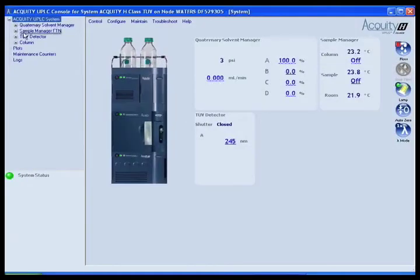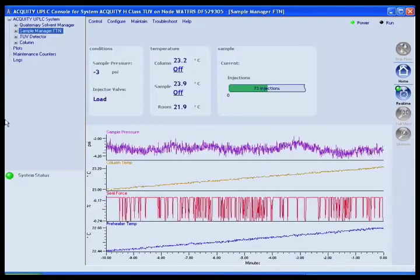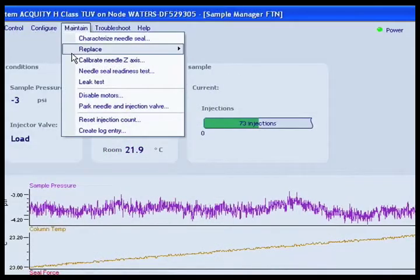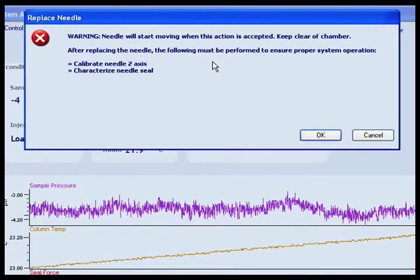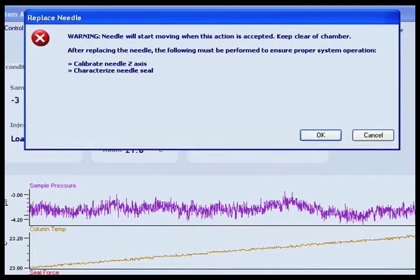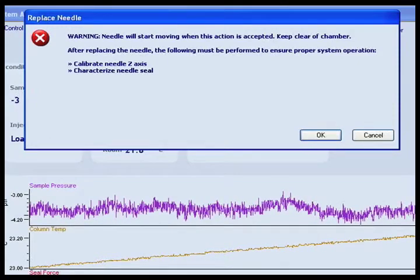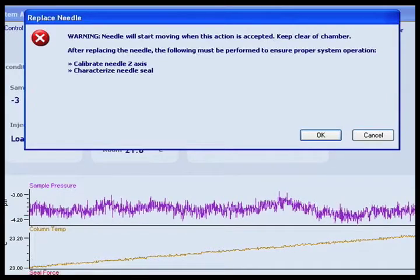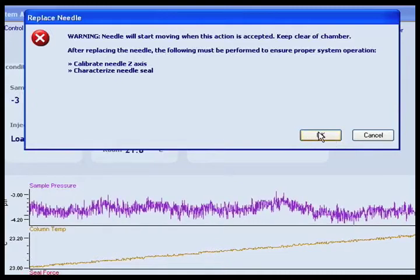In the console, select Sample Manager FTN from the system tree. From the menu bar, click Maintain, Replace Needle. A message appears warning that the needle will move when the action is accepted and to keep clear of the chamber. A reminder to calibrate the needle's Z-axis and to characterize the needle's seal after replacing the needle also appears. Click OK.